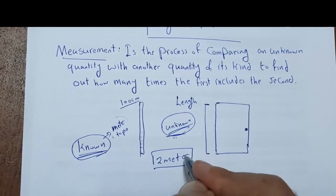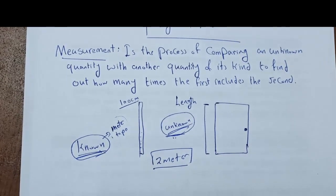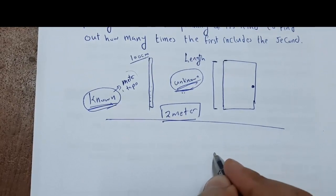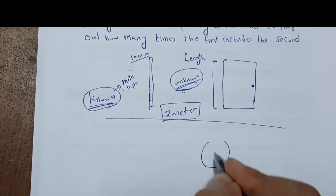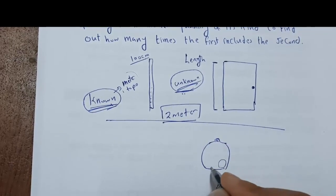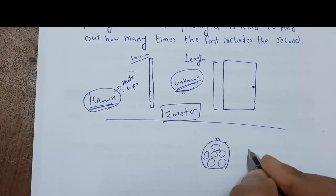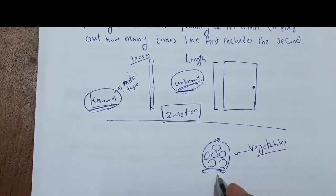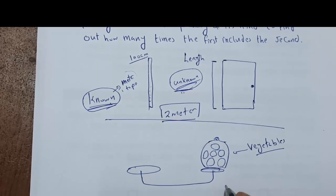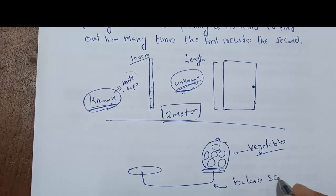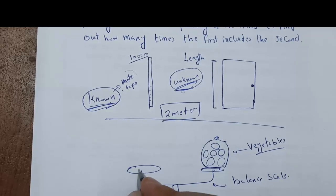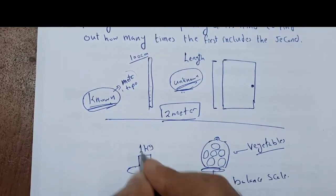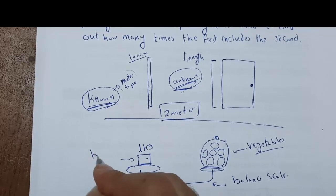For example, the length was two meters — you find out how many times the unknown includes the known. This is measurement. Another example: if you have vegetables in a bag and you want to know the mass of these vegetables, how can you measure the mass? Using a balance scale. The seller will use known masses, for example one kilogram.